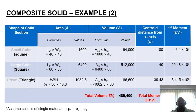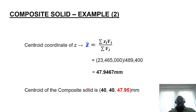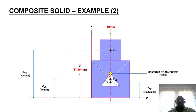Now we can calculate the centroid coordinate for z: it equals the first moment of volume with respect to z divided by the total volume. That is 23,465,000 divided by 489,400, which gives the z-coordinate as approximately 47.95mm. That gives us the full centroid coordinates for the composite solid — x = 40mm, y = 40mm, z = 47.95mm. Fairly straightforward if you follow the given methodology and use diagrams effectively.